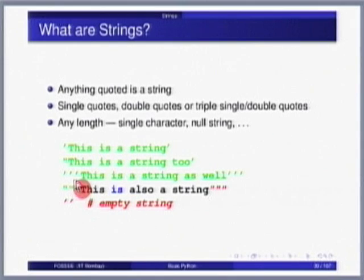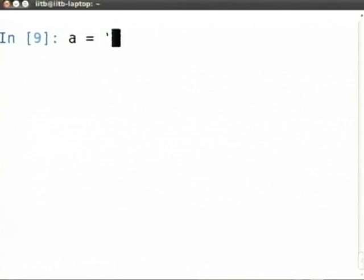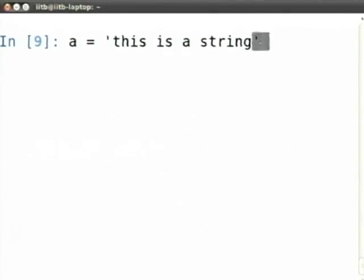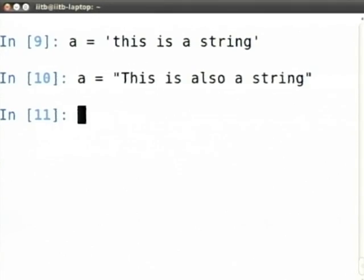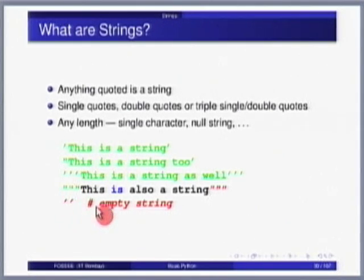This is also a string — actually there is a mistake here, this should be a double quote. Notice that triple quotes use the same quotation mark three times. You can do it with three single quotes or three double quotes. This one is an empty string. The hash symbol denotes an inline comment.